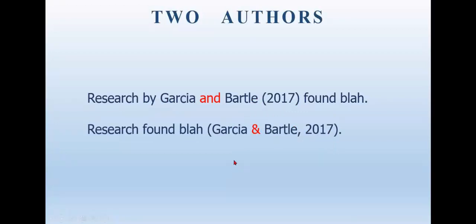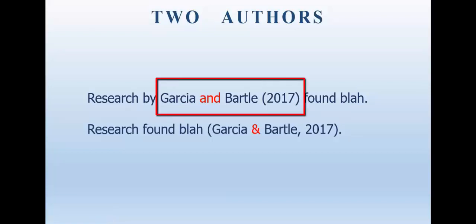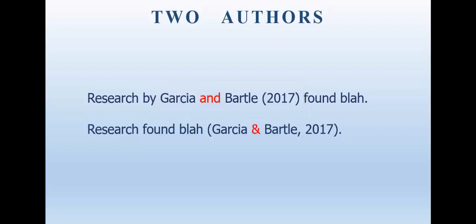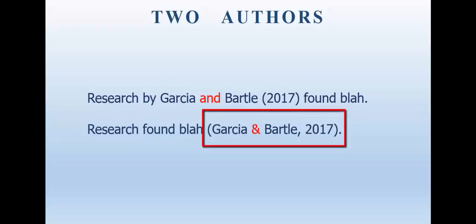Now if the item you're working with has two authors and you wish to use their names in narrative, you always list the first author first, because they're first for a reason. It's the first listed author first, and then the word 'and,' and then the second author's last name, immediately followed by the year. Or if you choose to put it all parenthetical, then it will be: open parentheses, first author's last name, ampersand, second author's last name, comma, space, year, close parentheses, and any necessary punctuation.